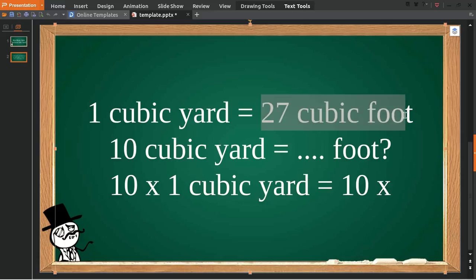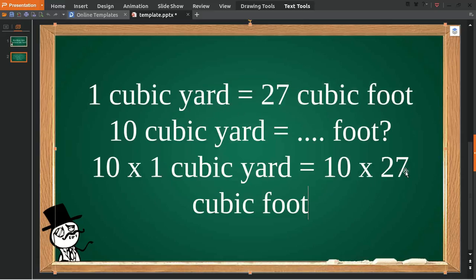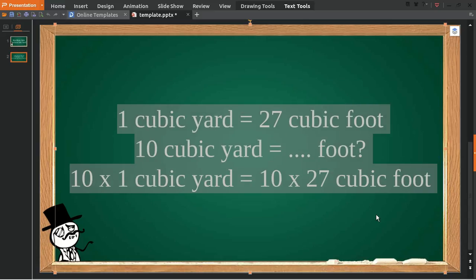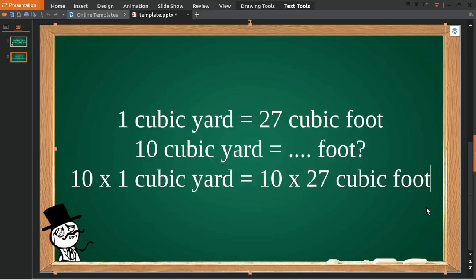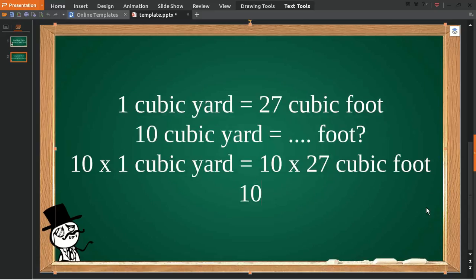And then you multiply 10 with 27. Okay, all right. And then 10 times 1 cubic yard is equal to 10 cubic yards. And 10 times 27 cubic feet is equal to 270 cubic feet.